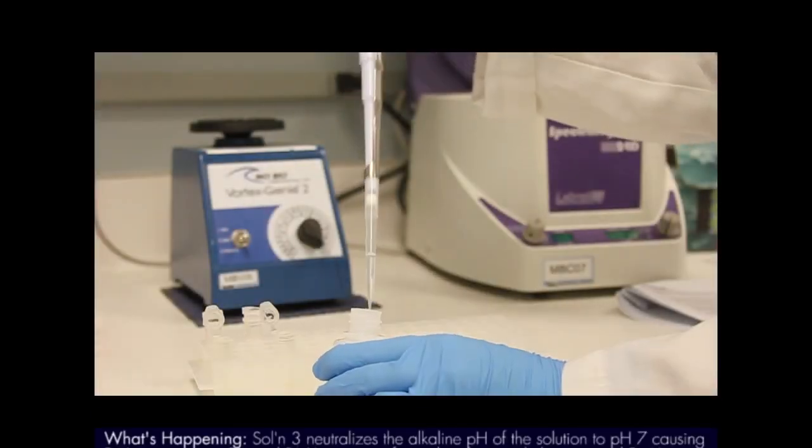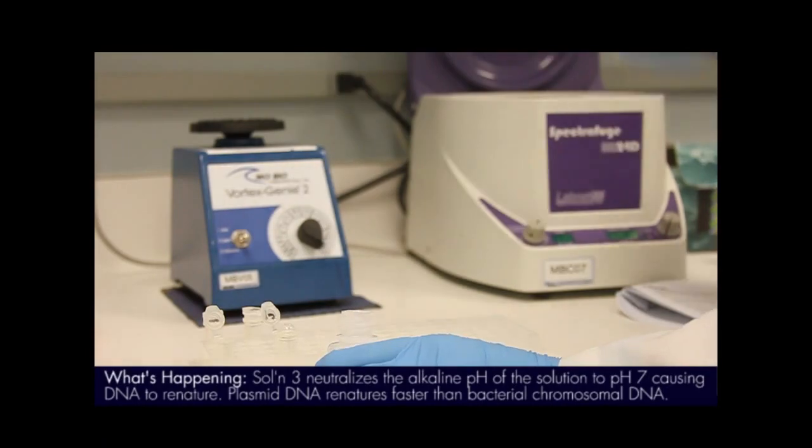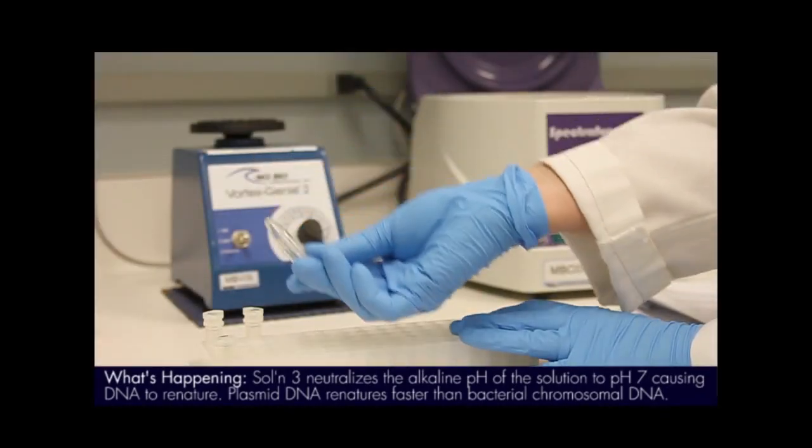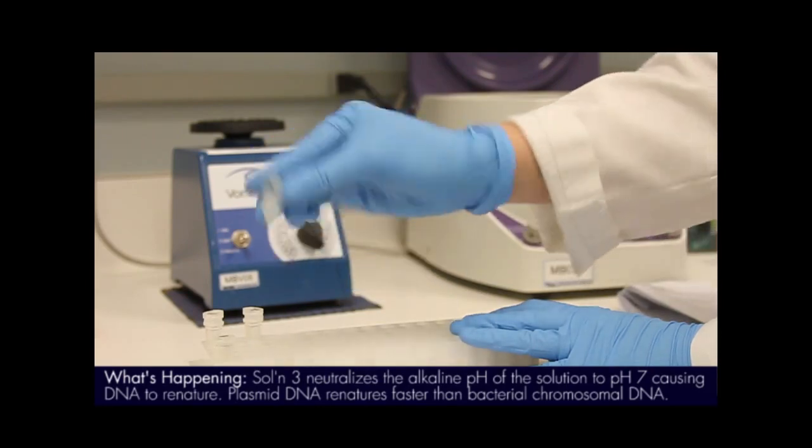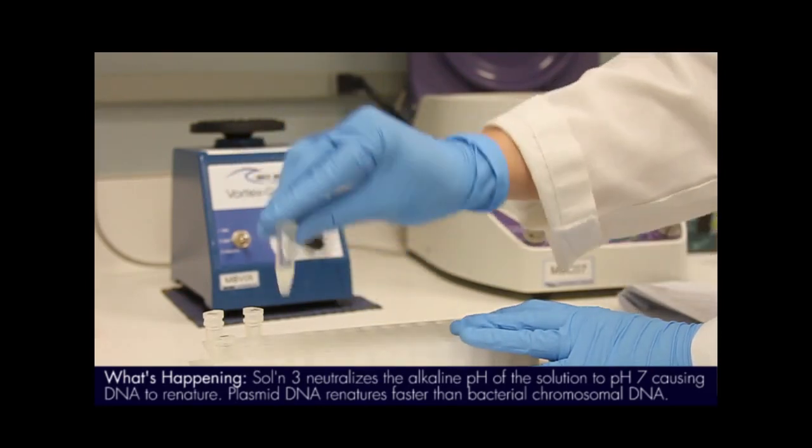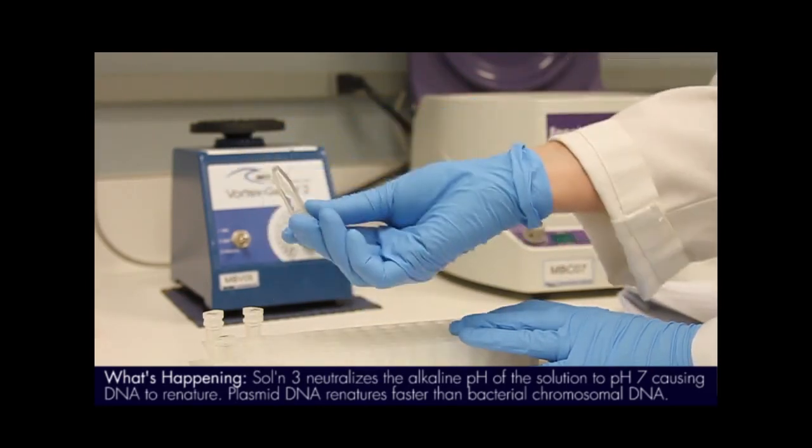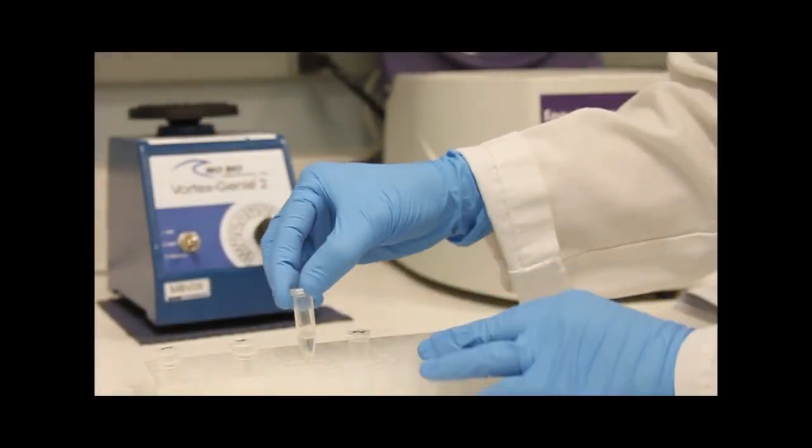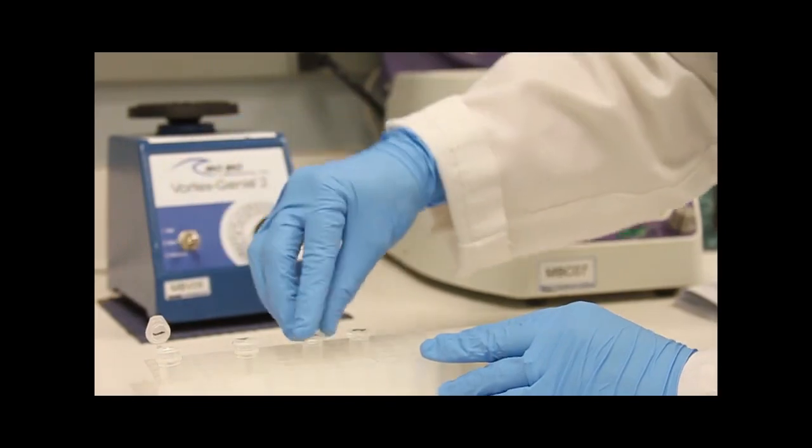Next, we will add solution 3 to neutralize the pH of the cell lysate. Invert 8 times to mix and centrifuge the tubes at 16,000 times G for 1 minute to pellet the cell debris. You should now see clear non-viscous supernatant on top of a large white pellet stuck to the sides of the tube.